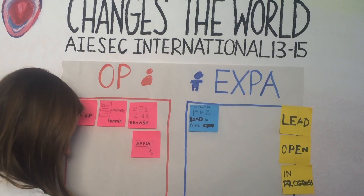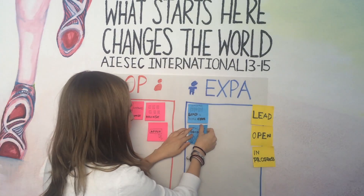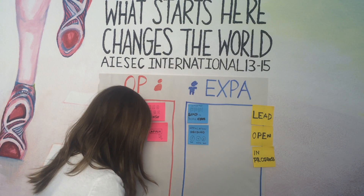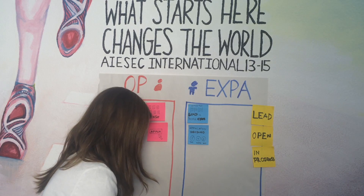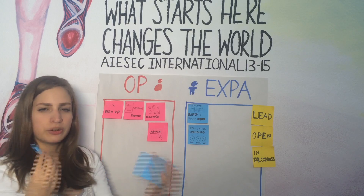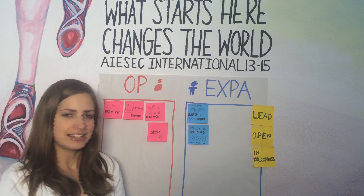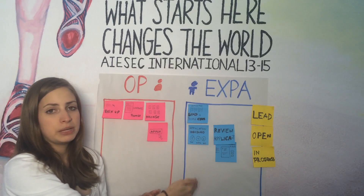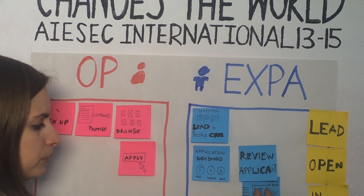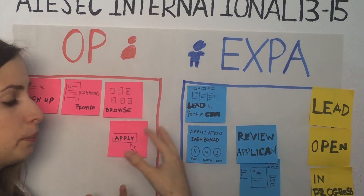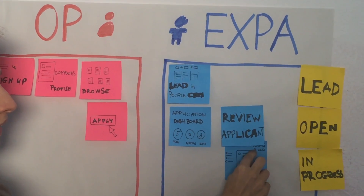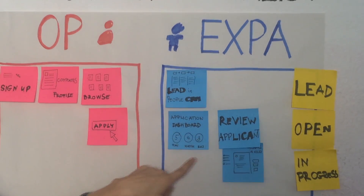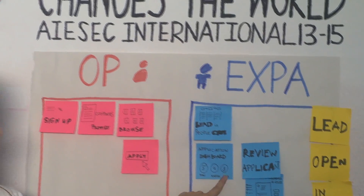So what happens on the other side of the system? Once the person clicks on apply, they are visible in the application dashboard of the TN manager, which means that the TN manager can review the applicant — they can see all the people who applied for that TN, what other TNs the applicant applied for, and they can take several actions. They can favorite an EP, which will be visible in their application dashboard, they can reject the person, or they can match someone.